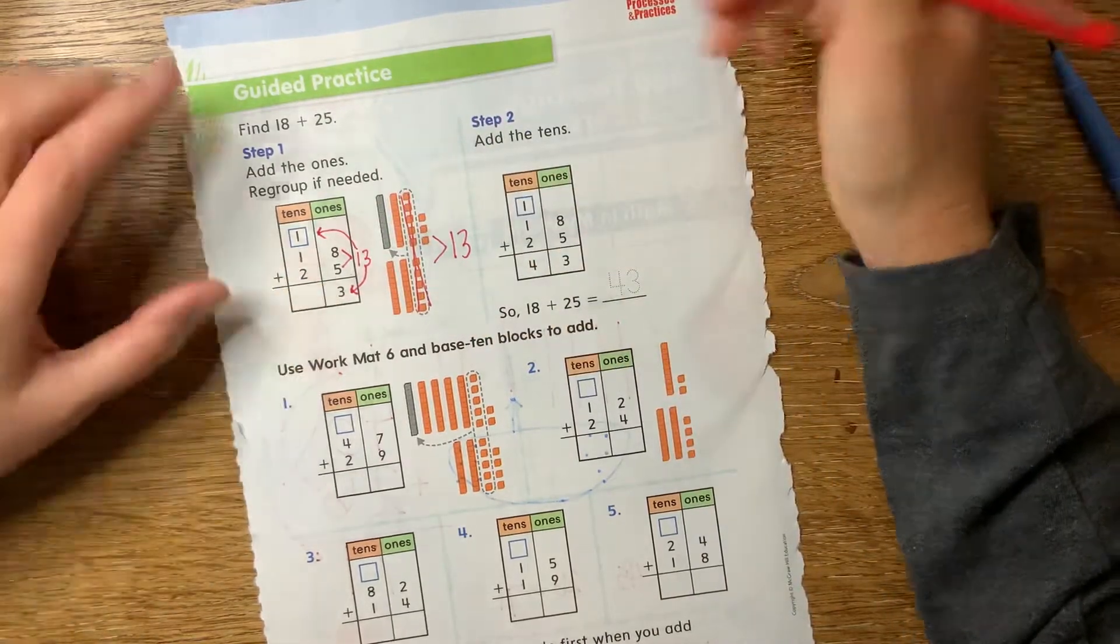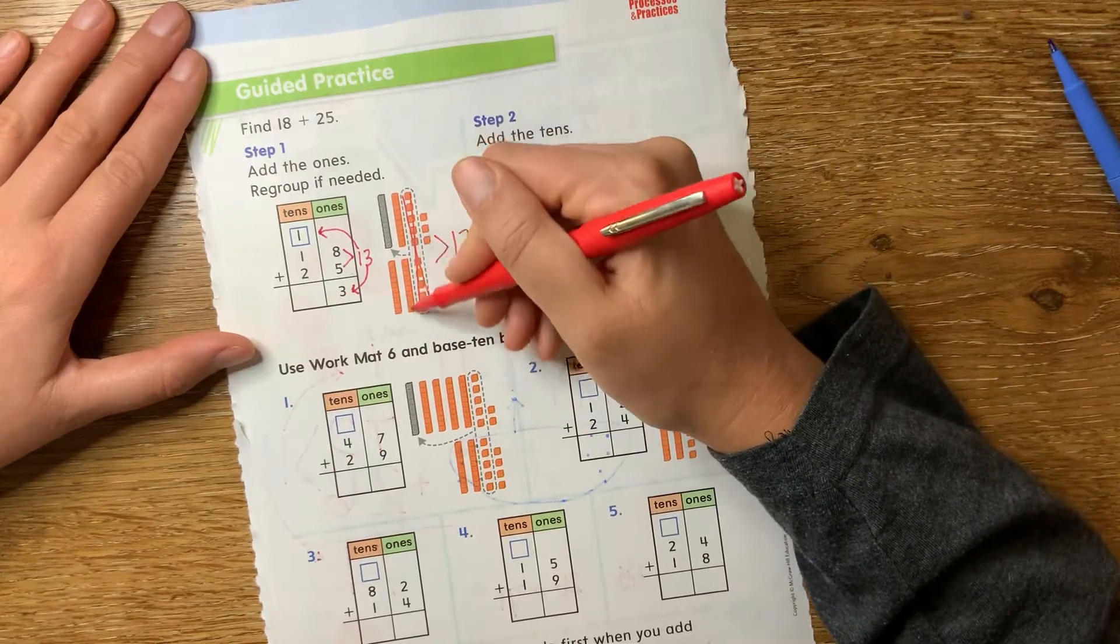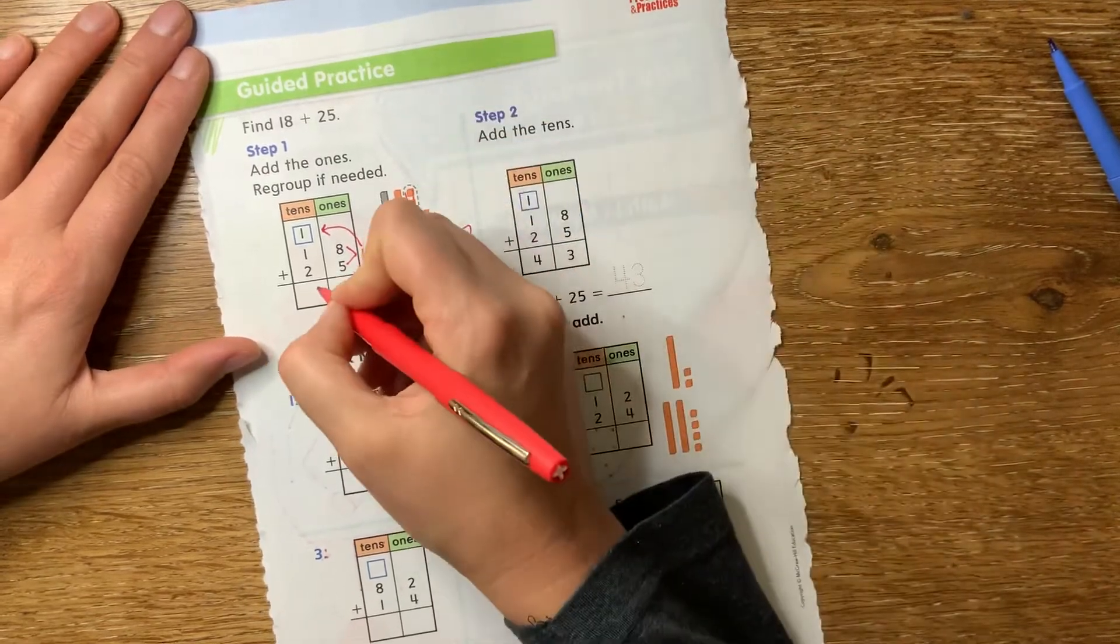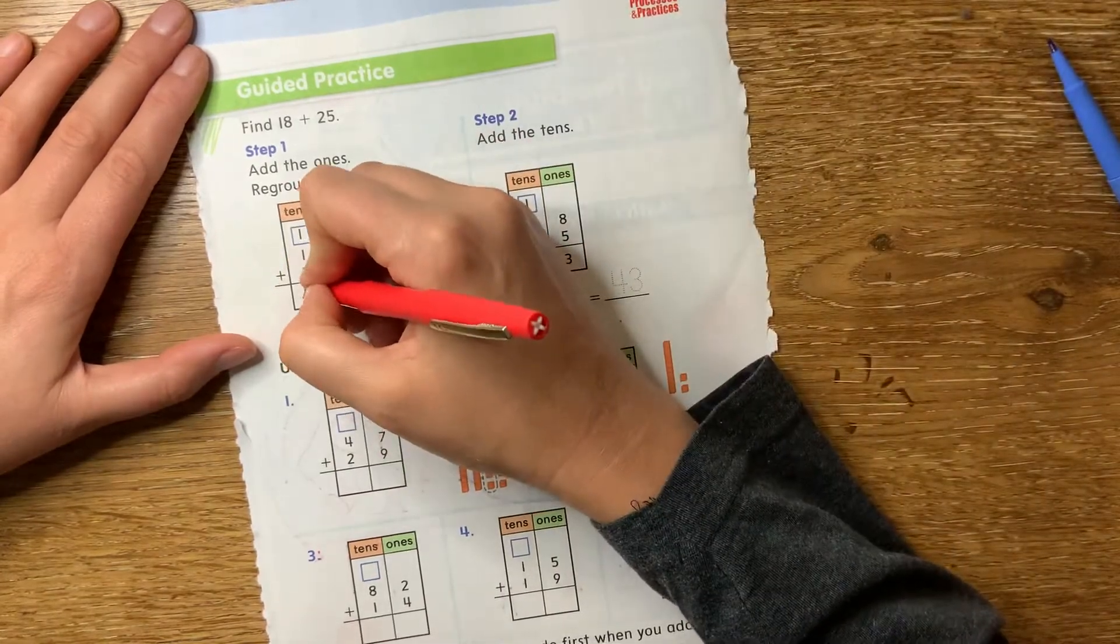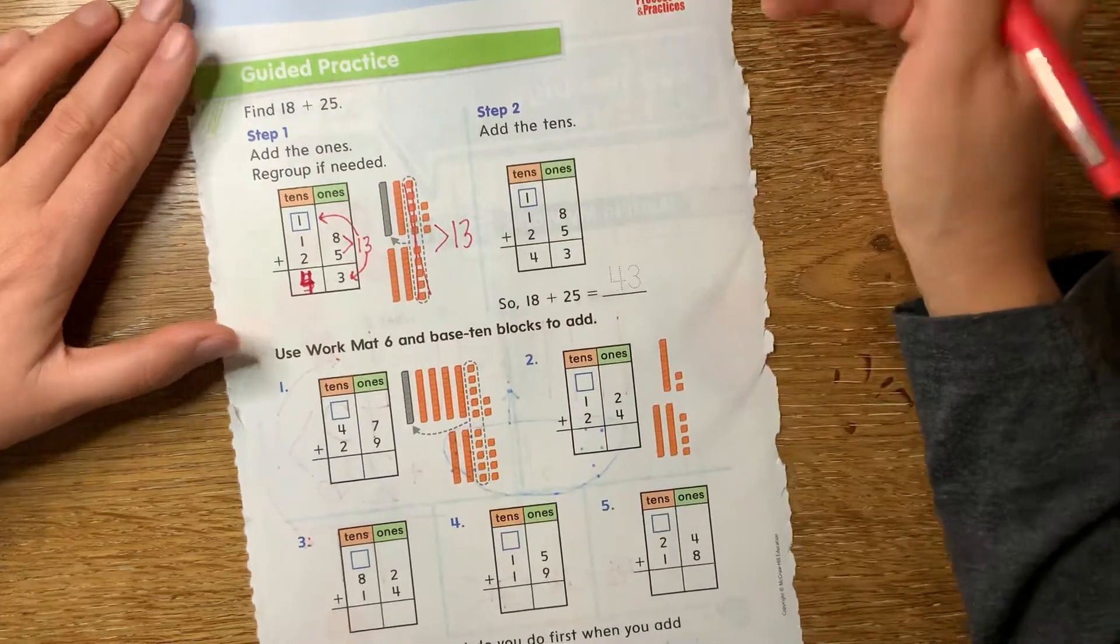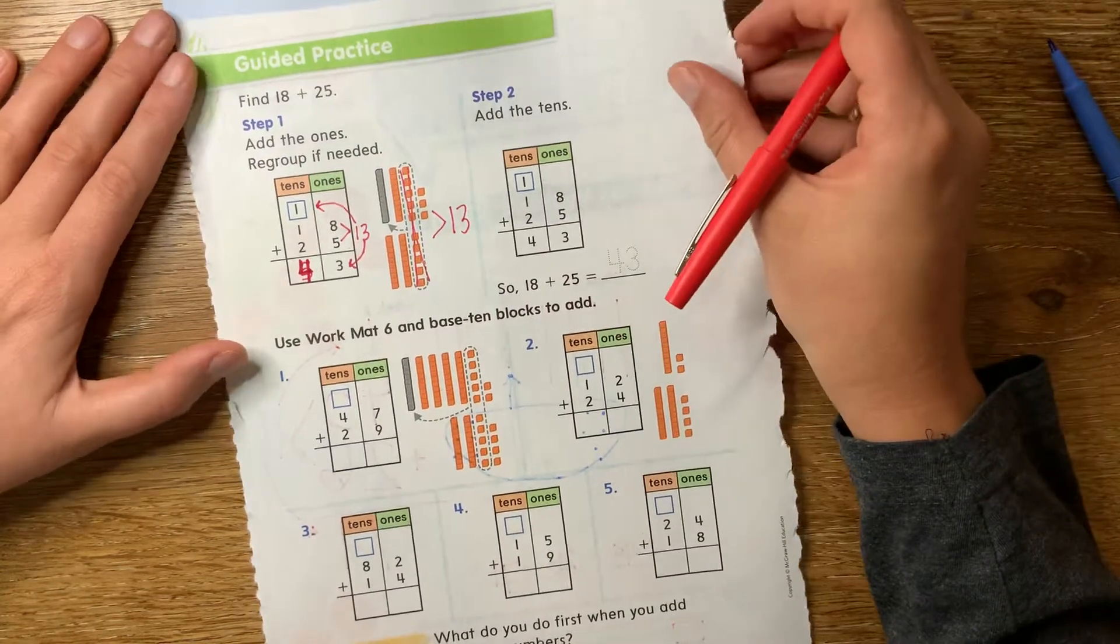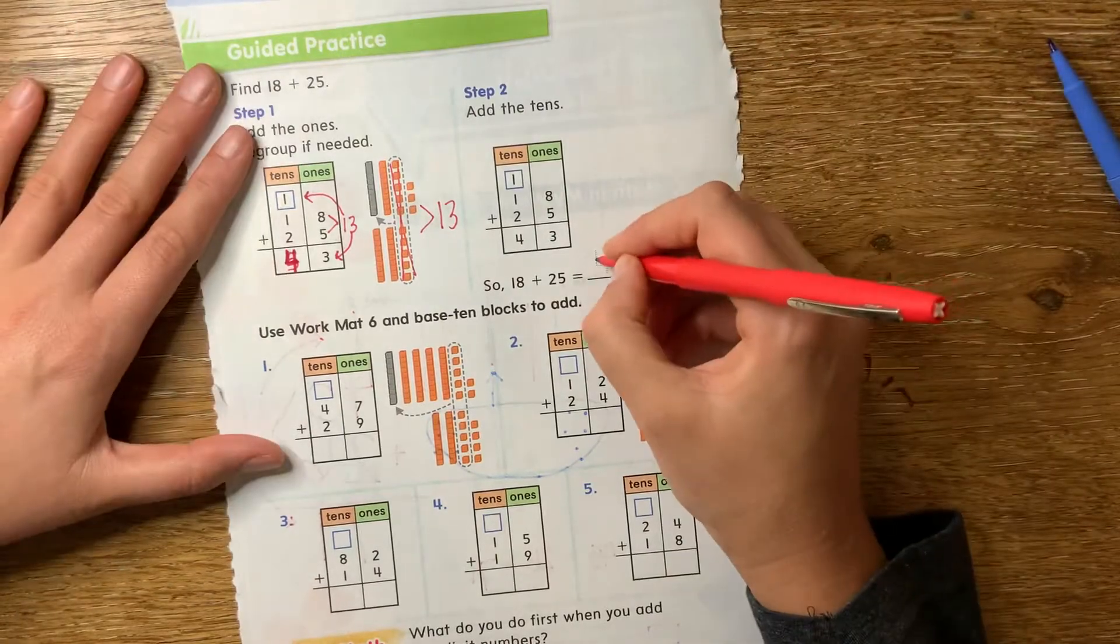So if I take 10 ones out of 13, there are three ones left. That's why there's three ones in my answer. And so now I have another 10 plus the 10 from 18 plus the two 10s from 25, which equals four 10s altogether. Sorry, sorry, sorry. I'm trying to do too many things at one time. Okay, four 10s altogether. It's 43, okay? So that's exactly what they did here. So 18 plus 25 is 43.